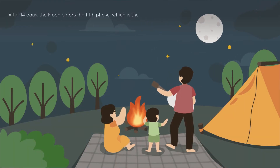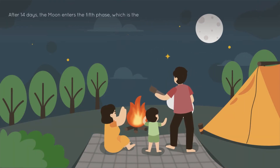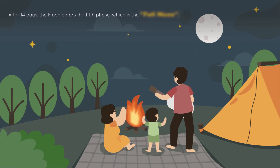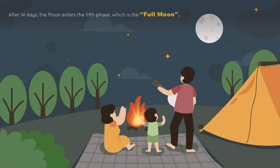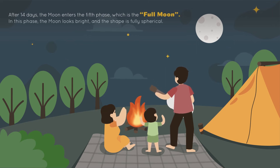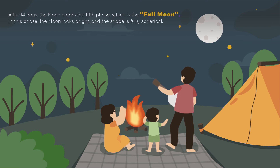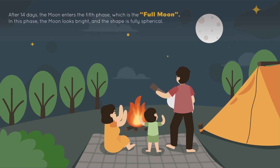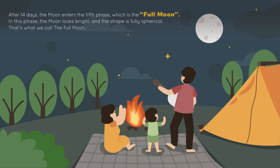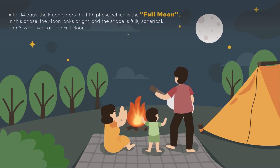After 14 days, the moon enters the fifth phase, which is the full moon. In this phase, the moon looks bright and the shape is fully spherical.